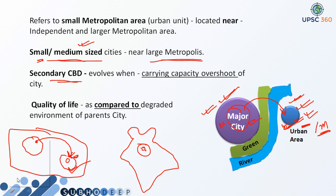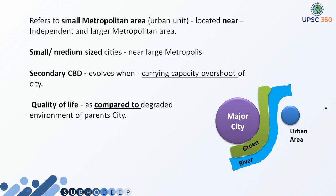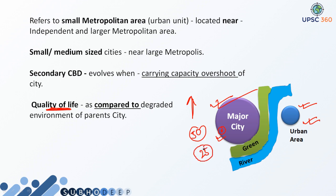Also, if people live in satellite towns, the quality of life is quite upgraded compared to the major city. If someone lives in the major city, they have to pay a huge rent. But if a person is living in the satellite town, the rent to be paid is quite less compared to the parent city. For example, if you are earning 50,000 rupees and paying 25,000 as rent in the city, you are saving only 25,000. But in the satellite town, if you are paying only 10,000 as rent, you are saving 40,000 — automatically the quality of life gets better.